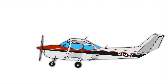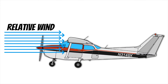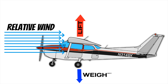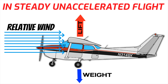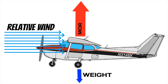Our wings use two things to create lift: relative wind and the shape of the wing. Lift is an upward force that opposes the weight of an aircraft and everything on board. In steady, unaccelerated flight, lift equals weight. But if we want to climb or create more lift, we have to do something. Let's take a look at how an airplane creates lift.